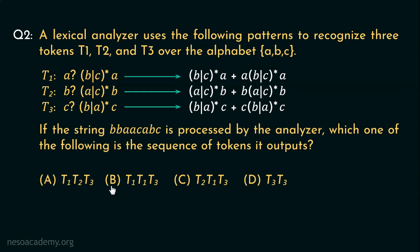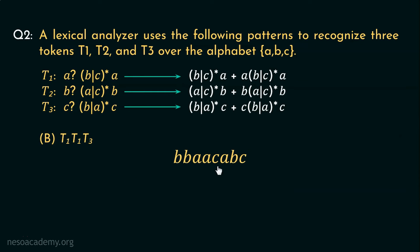Now, option B is T1, T1, T3. Let's observe the string for that. Considering T1, using this regex portion of T1, we can represent B, B, A like the last one. Now we again have T1 and the remaining portion of the string begins with A. Now, if we use this regex portion, it will help us achieve A, C, A. That is, A followed by a C generated from (B or C) whole star followed by A.